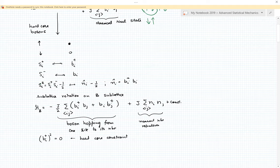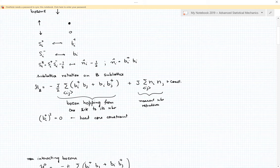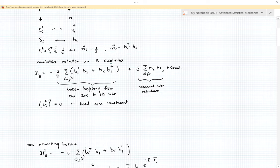So that corroborates this mapping. Now with an additional sublattice rotation on the B sublattice, as I explained in the last lecture, the Hamiltonian we get is a hopping term for bosons from one site to another and a nearest neighbor repulsion plus a constant.